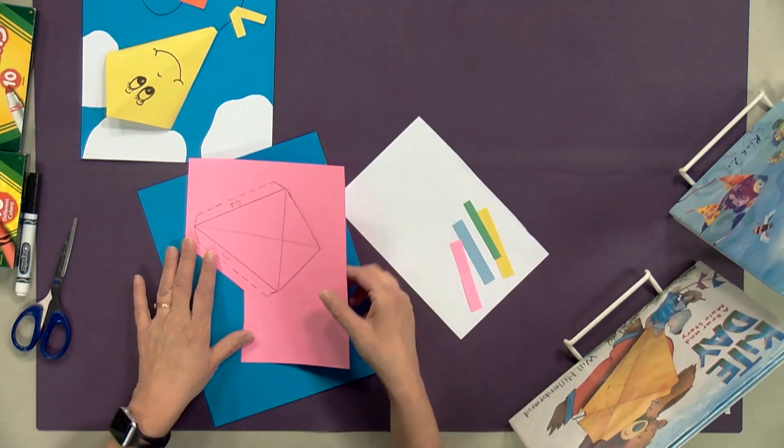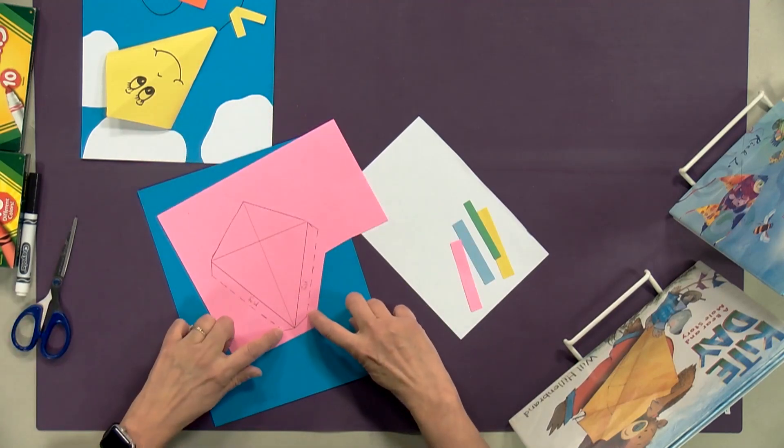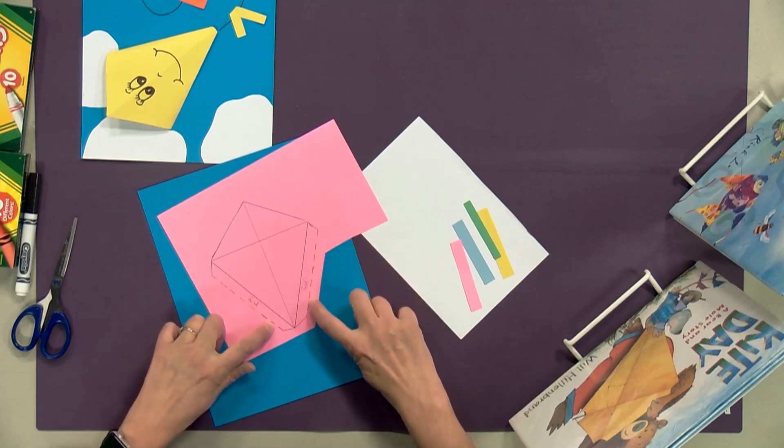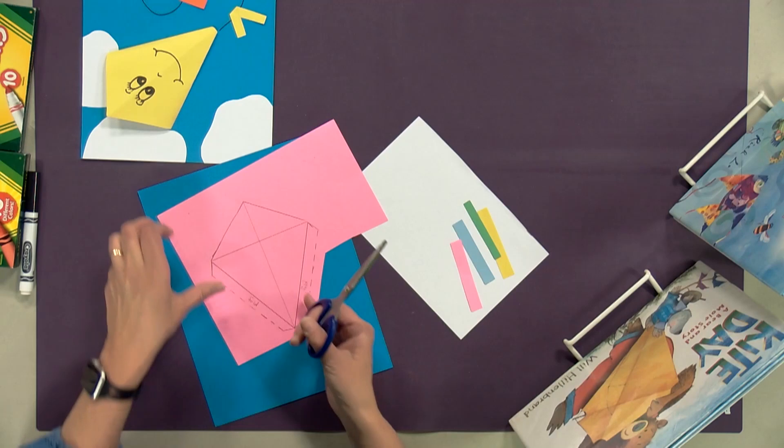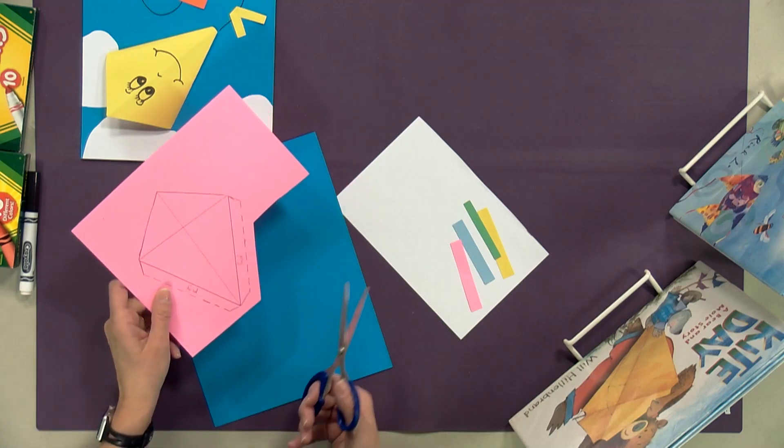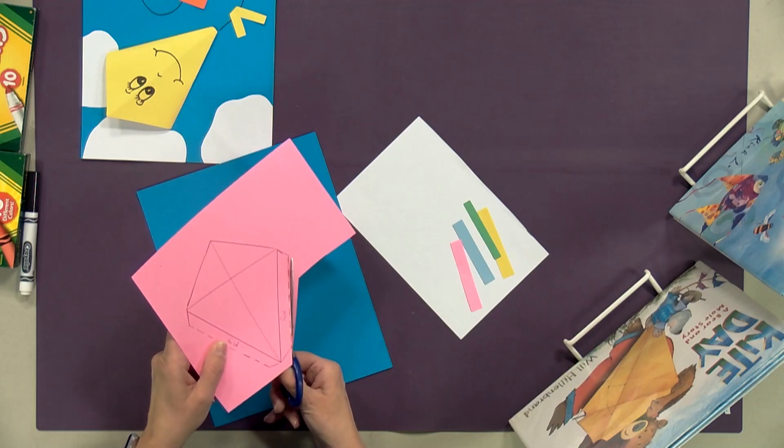The first thing you're going to do is cut out our kite template. Now there are parts here that are dotted. Anytime you see a dotted line on a template, that does not mean to cut it. That means we're going to fold.